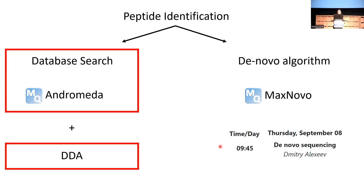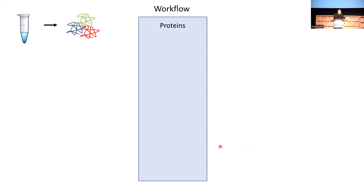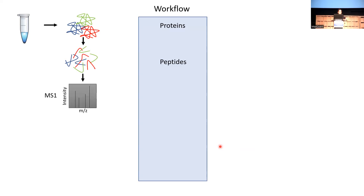For de novo, we will also have a presentation on Thursday from Dima focusing on the de novo algorithm. For the rest of this presentation, we are focusing on database search and DDA acquisition method. So: we start with our sample, we extract the proteins, and then we digest them into peptides - for example with trypsin. Then we do the MS1 spectra analysis, and since we're doing DDA and not DIA, we choose one analyte at a time to do fragmentation and obtain the MSMS spectra.